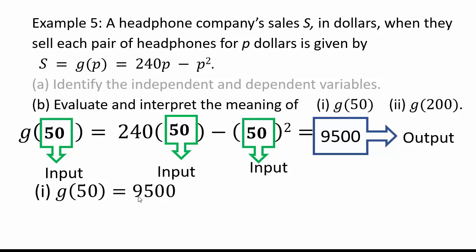But it's not just important to compute functions. You need to know what this means. What does the 50 represent? P was 50. P is the price. So if you sold headphones for $50 per headphone, you are going to make 9500 units sale. So you sold 9500 headphones if you set the price at $50 per headphone.